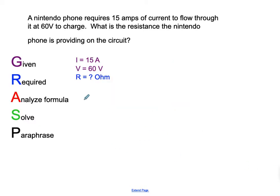So let me go through a simple example. We are looking at a Nintendo phone requires 15 amps of current to flow through at 60 volts to charge. So you're trying to charge your Nintendo phone. What is the resistance the Nintendo phone is providing on the circuit?